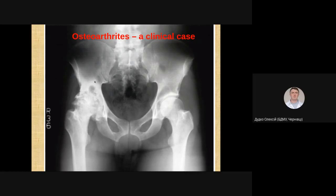We can also note a very intensive density area of the acetabulum and formation of osteophytes of the acetabulum and femoral head. So we have the fourth stage of osteoarthritis on this side.